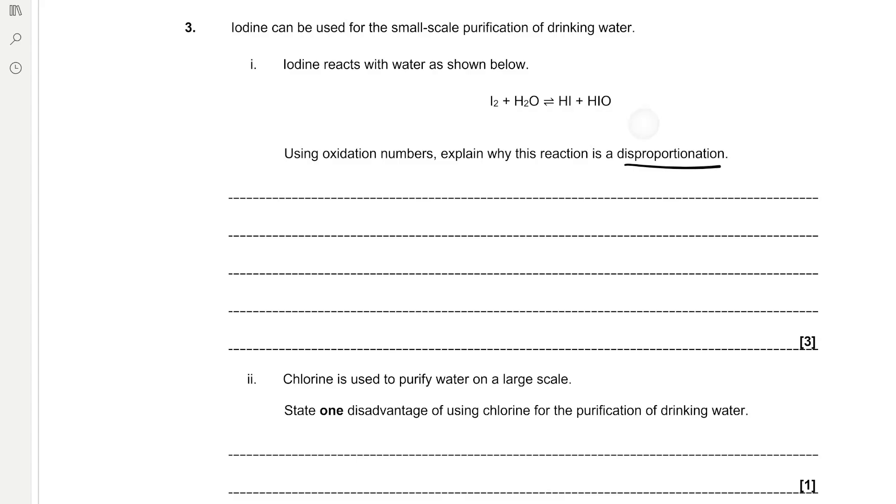And we can see that it starts as 0 in I2 and goes to -1 in HI because hydrogen is always +1 unless it's in a metal hydride. And it goes to +1 in HIO because oxygen is always -2 unless it's in a fluorine compound or a peroxide. And hydrogen is always +1. So that means that to get to 0, iodine has to be +1.